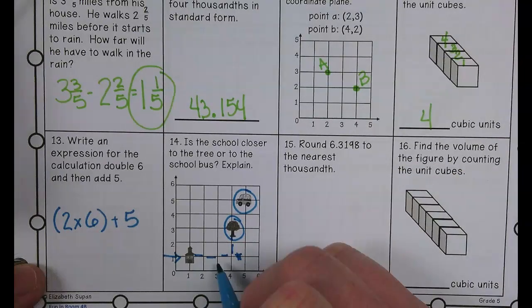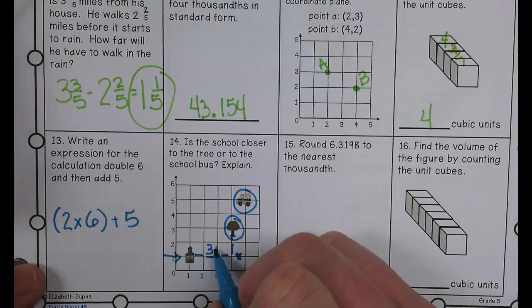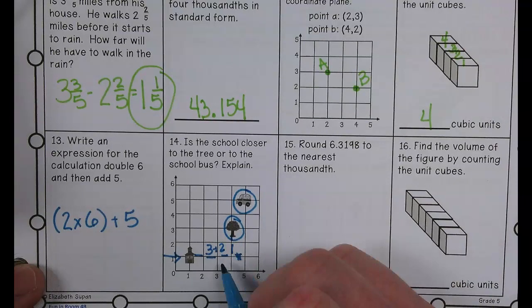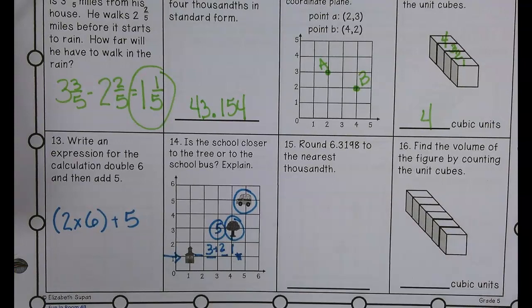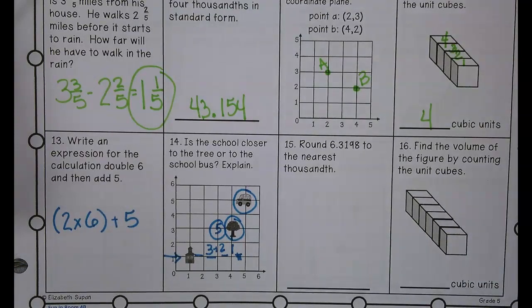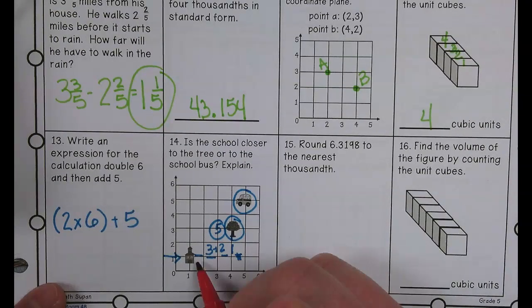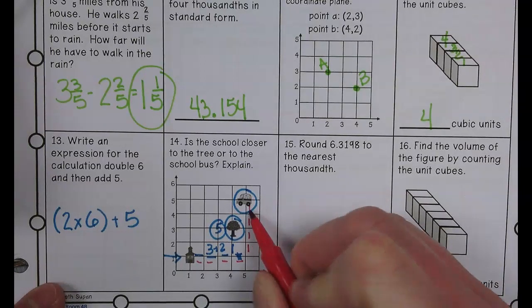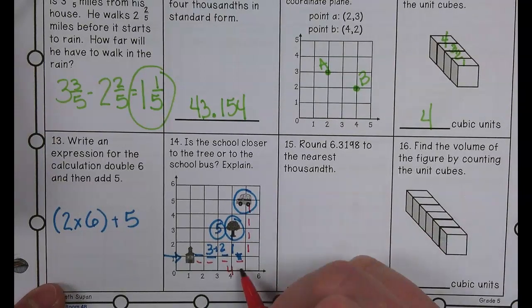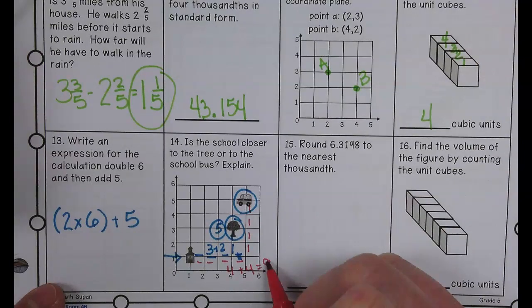So to get to the tree, it's over 3, up to, for a total of 5. And then to get to the school bus, it's what? So over 4, 1, 2, 3, 4. Up 4, 1, 2, 3, 4. So 4 plus 4 equals 8.